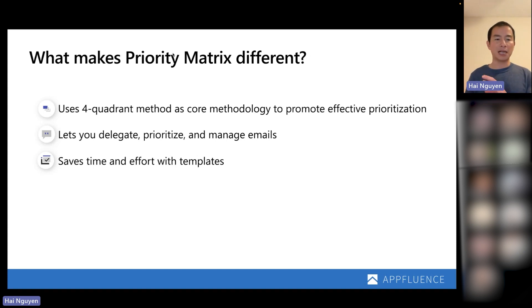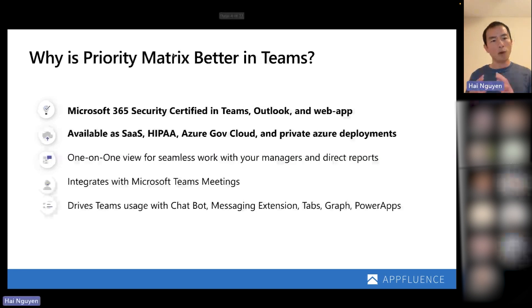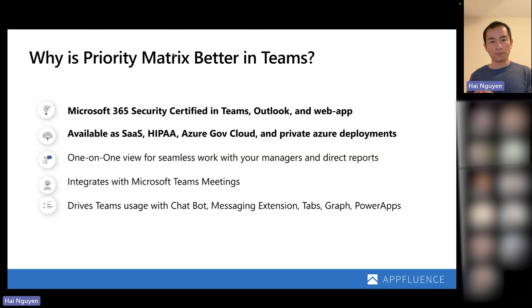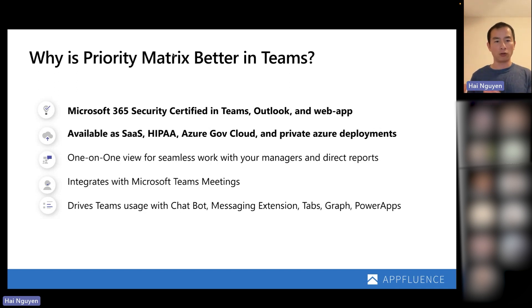At the same time, we save you time and effort using templates, all of which are accessible inside Teams and deployable and shareable across your organization. Why is Priority Matrix better in Teams? Priority Matrix is Microsoft 365 security certified for Teams, Outlook, and the web app — we're one, if not the only, application certified across all three.